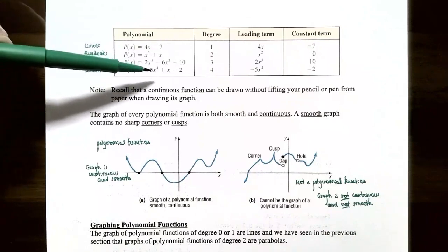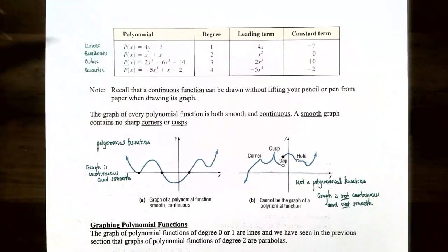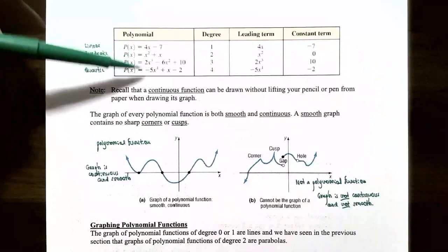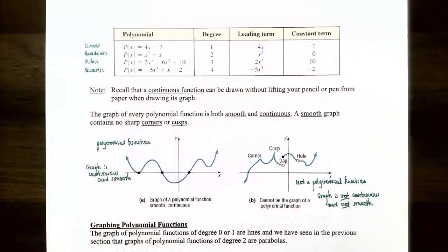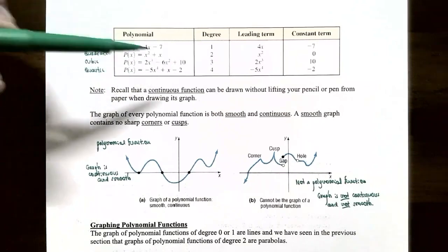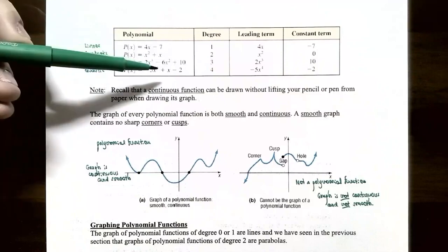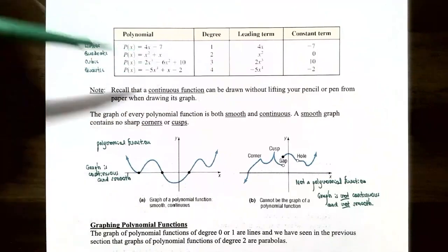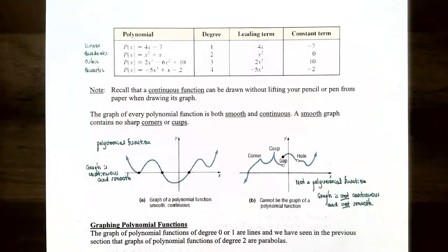For p(x) equals negative 5x to the 4th plus x minus 2, the highest power is 4, so the degree is 4. The leading term is negative 5x to the 4th and the constant term is negative 2. Note that you don't need every power of x — for example, the x cubed and x squared terms here have coefficient 0. A degree 4 polynomial function is called a quartic polynomial.